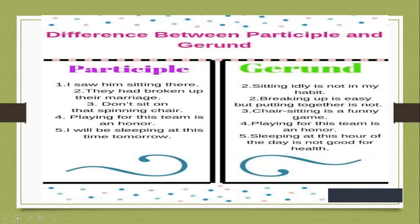Here are a few comparison examples: 'I saw him sitting there' — I am talking about him, the verb is sitting with -ing, but it is telling about him, so it is a present participle. 'Sitting idly is not in my habit' — I am talking in a generic sense about sitting idly, so it is a gerund. 'They had broken up their marriage' — broken. 'Breaking up is easy, but putting together is not.' 'That spinning chair.' 'Playing for this team is an honor.' 'I will be sleeping at this time tomorrow.' 'Sleeping at this hour of the day is not good for him.' You should be pretty clear about in what form participles and gerunds have been used.